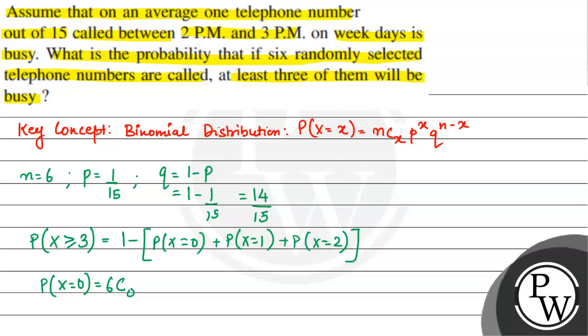Multiplied by p which is 1 by 15 to the power 0, and q is 14 by 15 to the power, to the power n minus x which is 6, right?